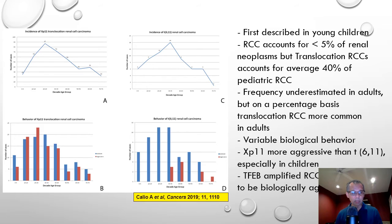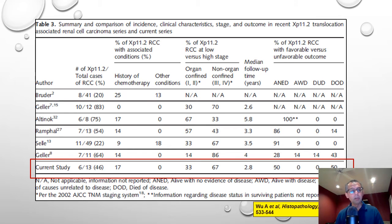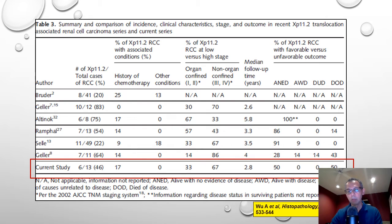The biological behavior of these tumors is quite heterogeneous. In general, XP11 translocation renal cell carcinoma is more aggressive than t(6;11) RCC, especially in children. Recently, TFEB-amplified renal cell carcinoma has also been shown to be biologically very aggressive. When I was at the University of Michigan, we published a series of 13 renal cell carcinomas in the pediatric age group, with a frequency of about 46% for translocation renal cell carcinomas. A small proportion had a history of previous chemotherapy, which appears to be a risk factor for development of these tumors, and the majority were non-organ confined and biologically aggressive.